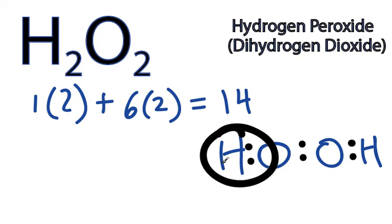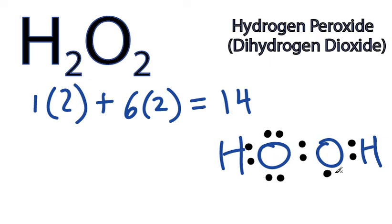Hydrogen only needs 2 valence electrons for a full outer shell, so it's good, and now we'll put electrons on the inner atoms. So we have 2, 4, 6, 8, 10, 12, 14 valence electrons.